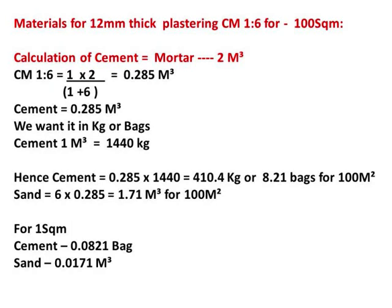For cement mortar 1:6, cement part is 1 divided by (1+6), so 1 part into 2 cubic meters divided by 7, which equals 0.285 cubic meters of cement. Converting to kg: 0.285 multiplied by 1440 kg/m³ gives 410.4 kg. Dividing by 50 gives 8.21 bags of cement for 100 square meters.